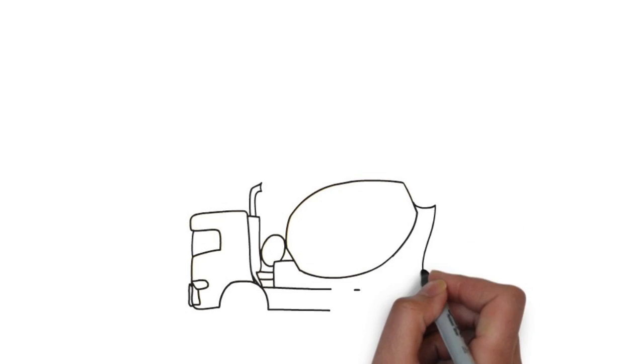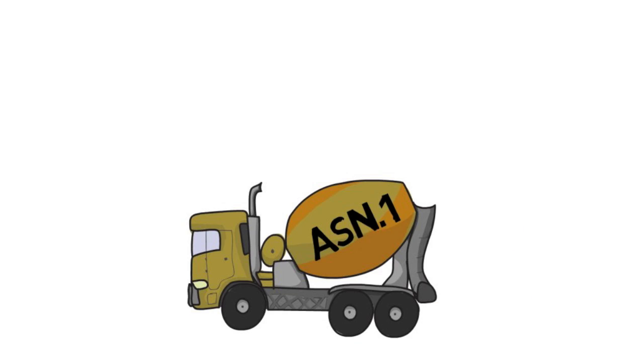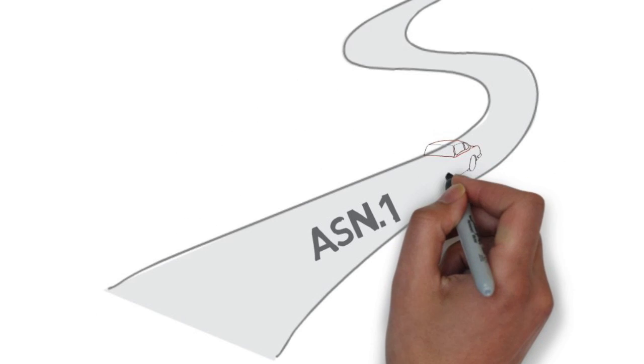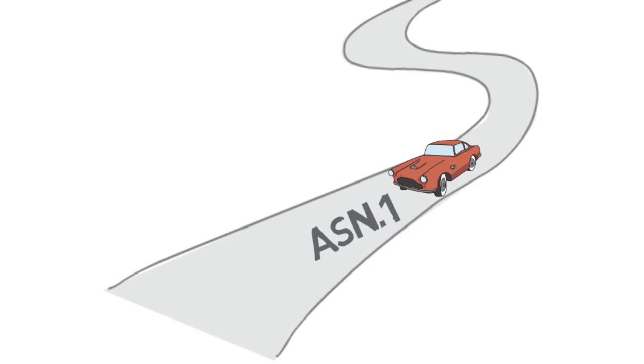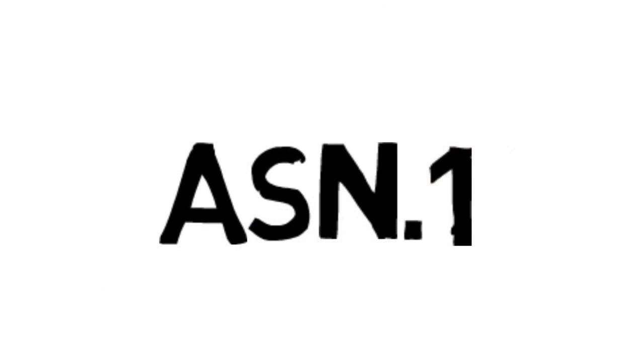Much like the cement in a concrete road, ASN-1 is a crucial component that is not obvious to the riders. It works so well, you don't even know it's there. But it's sure nice to be able to rely on it.